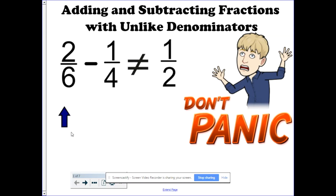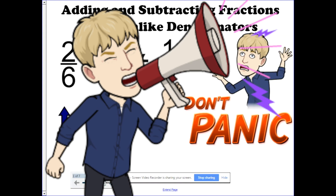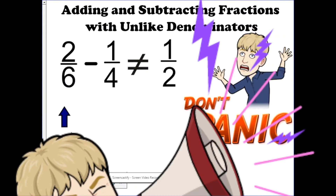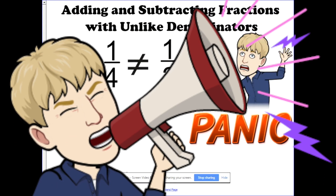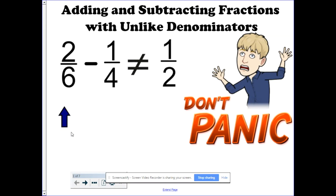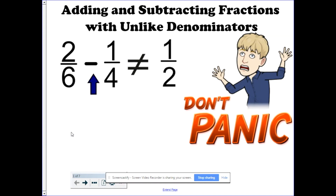There's a recurring theme throughout this unit, and that's make common denominators. Make common denominators. In order to add or subtract fractions, the denominators need to be the same. Even though it looks convenient to say 2 minus 1 is 1, and 6 minus 4 is 2, two sixths minus one fourth does not equal one half. You need to make common denominators.